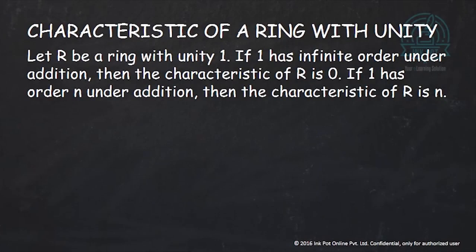This is an infinite ring clearly, but it has characteristic 2. The characteristic of Z2[x] equals 2 because if we add any element twice that gives us 0, since the coefficients are added modulo 2. When a ring contains the unity element it becomes easy to define the characteristic of the ring. Consider a ring R with unity element 1. Either 1 has finite additive order or infinite additive order. If 1 has infinite order, the characteristic of R is 0; if 1 has order n under addition, then the characteristic is n.